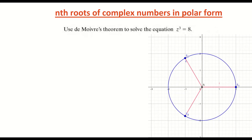In this video, we're looking at finding the nth roots of a complex number which is in polar form. The question we're going to look at is using De Moivre's theorem to solve the equation z to the power of 3 is equal to 8.